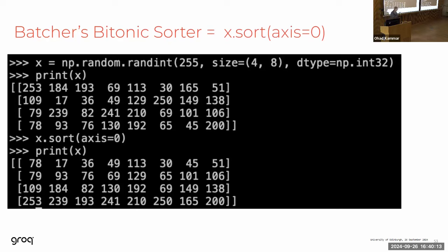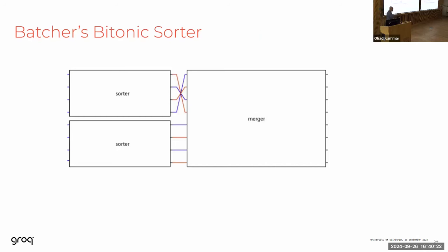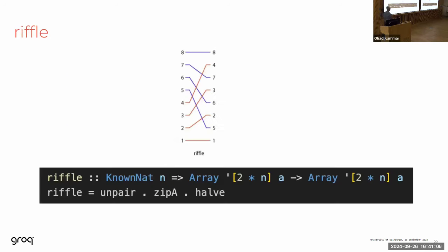How do we make this sorter? We make it recursively. Batcher's Bitonic Sorter can be built using a merger and two smaller sorters. The merger has the bitonic property — the second half of the input must be reversed. We recursively keep applying this picture to the bottom and top sorters, and eventually the merger comes down to just a two-sorter. For this, we define a whole bunch of combinators that help us define the wiring patterns and divide-and-conquer strategies used for this sorter.